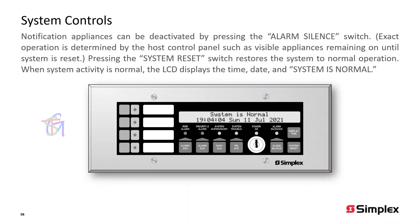Notification appliances can be deactivated by pressing the alarm silence switch. Pressing the system reset switch restores the system to normal operation. When system activity is normal, the LCD displays the time, date, and system is normal.